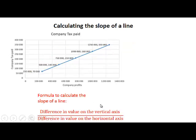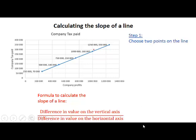The formula to calculate the slope of a line is the difference in value on the vertical axis divided by the difference in value on the horizontal axis. To do this, we choose two points on the line — we choose point A and point B.